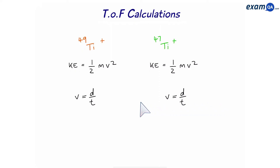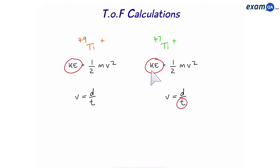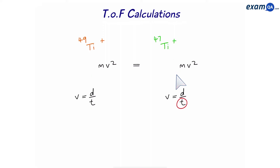Here's the second method. Just like before, we write the two kinetic energy equations. We want to work out the time of flight of Ti-47. First, since both ions have the same kinetic energy, we equate the two kinetic energy equations.